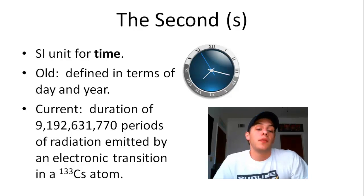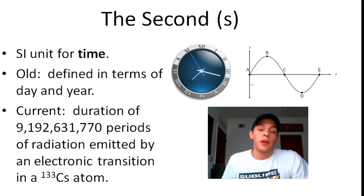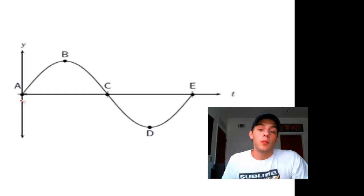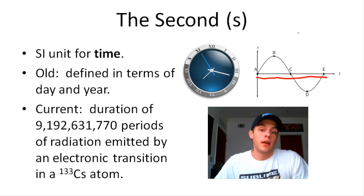And radiation behaves like waves. So when I say this many periods of radiation, well, the period of a wave is actually the distance that the wave takes to complete one complete cycle. So in this case here on this graph on the right side of your screen, the period of this wave would be the distance from A all the way to E. And this large number of periods of radiation emitted by this transition corresponds to exactly one second.